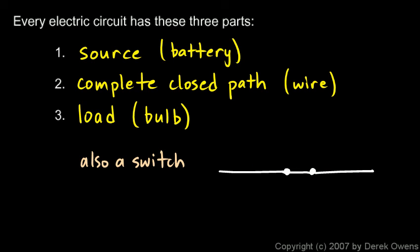If I close the switch — move this section down to complete the connection — then the electrons can flow through. This open/closed terminology is common but the meaning is reversed from what you might expect. If a door is open you can go through it; if a road is open you can drive on it. For an electric circuit it's the opposite: if the switch is closed, the electrons can flow — closing the switch closes the gap. If the switch is open, it looks like an open door, and electrons can't get through the gap, so the circuit is broken and the electrons don't move.